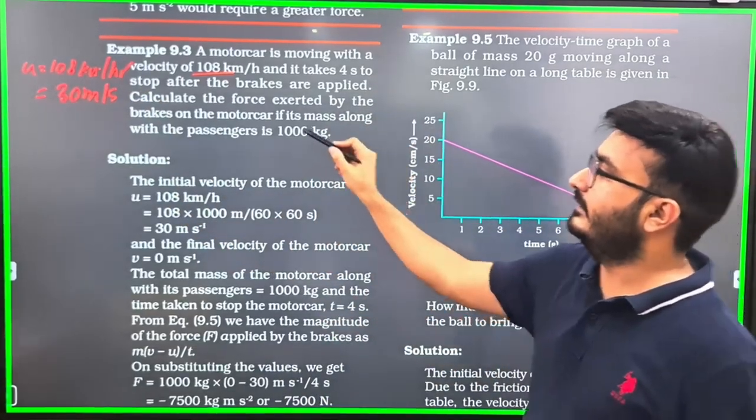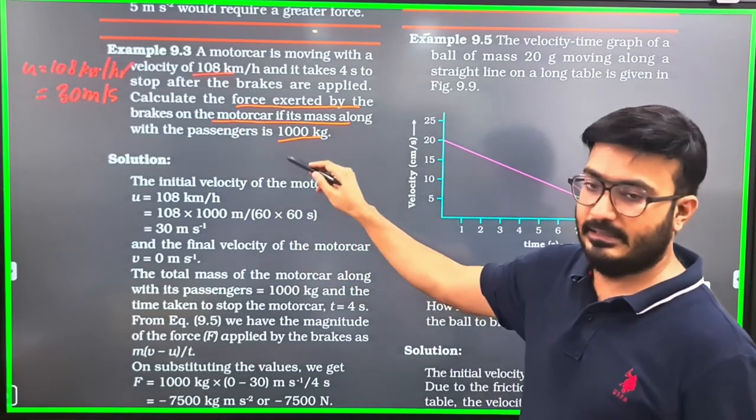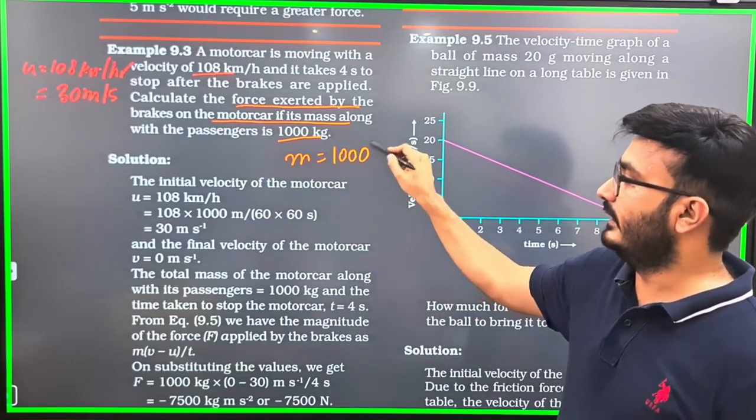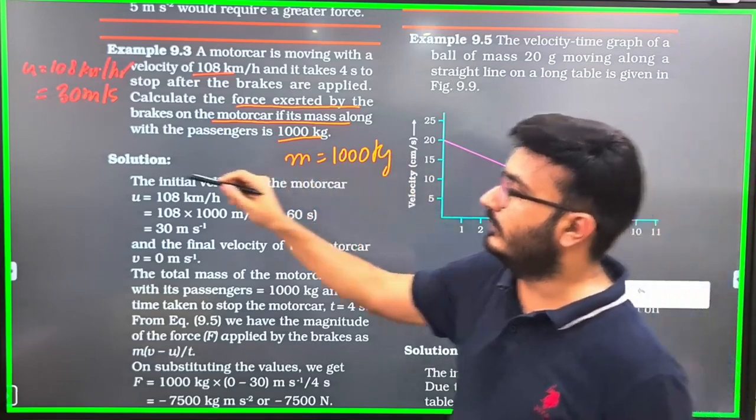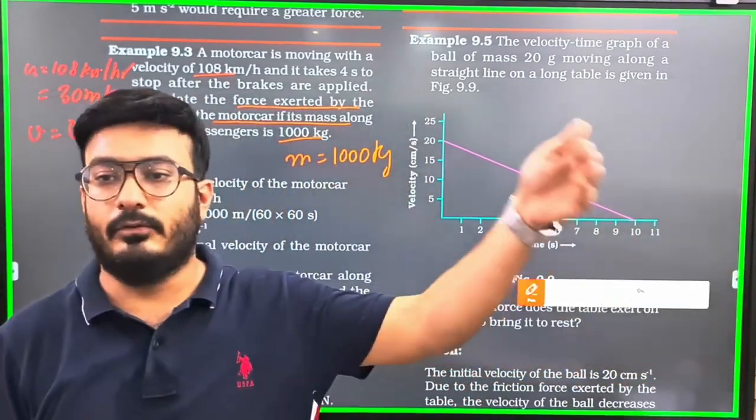Brakes are applied. Calculate the force exerted by the brakes on the motorcar. Mass is 1000 kg. So mass is how much? 1000 kg. And final velocity is 0 because the brakes are stuck, so V is 0.